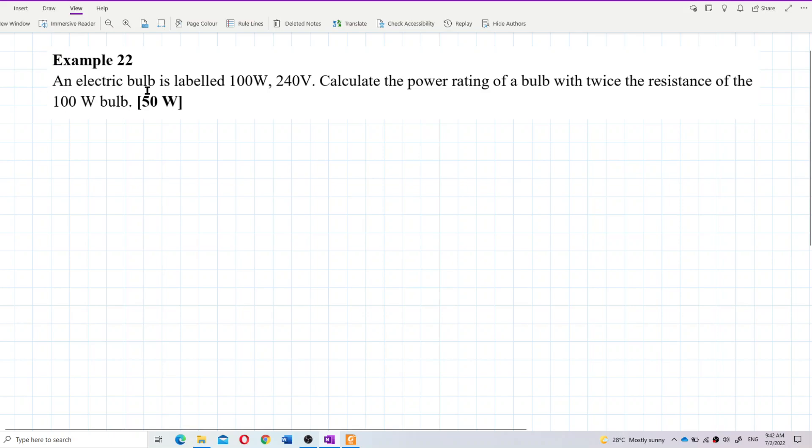An electric bulb is labelled 100W and 240V. Calculate the power rating of a bulb with twice the resistance of the 100W bulb.